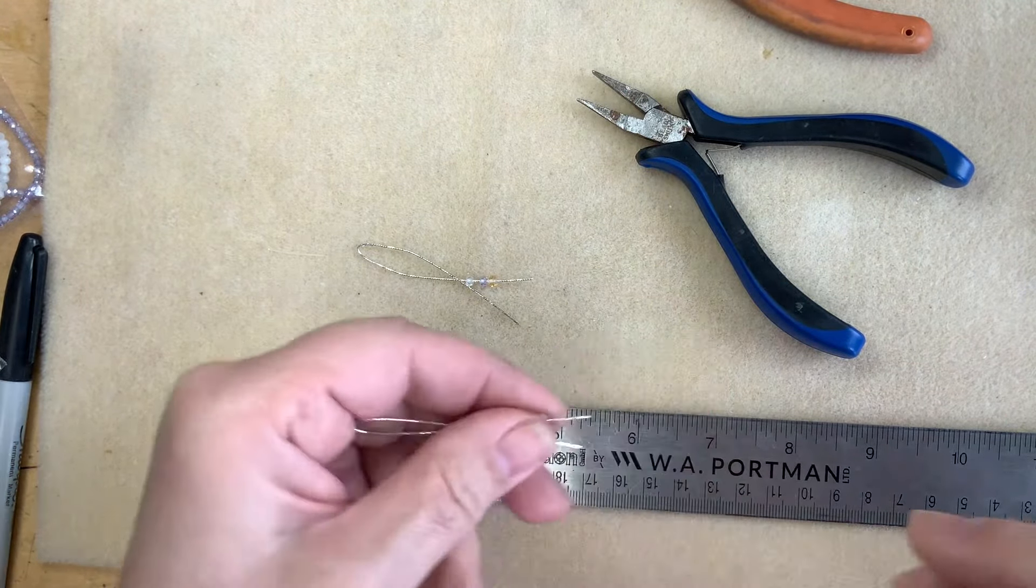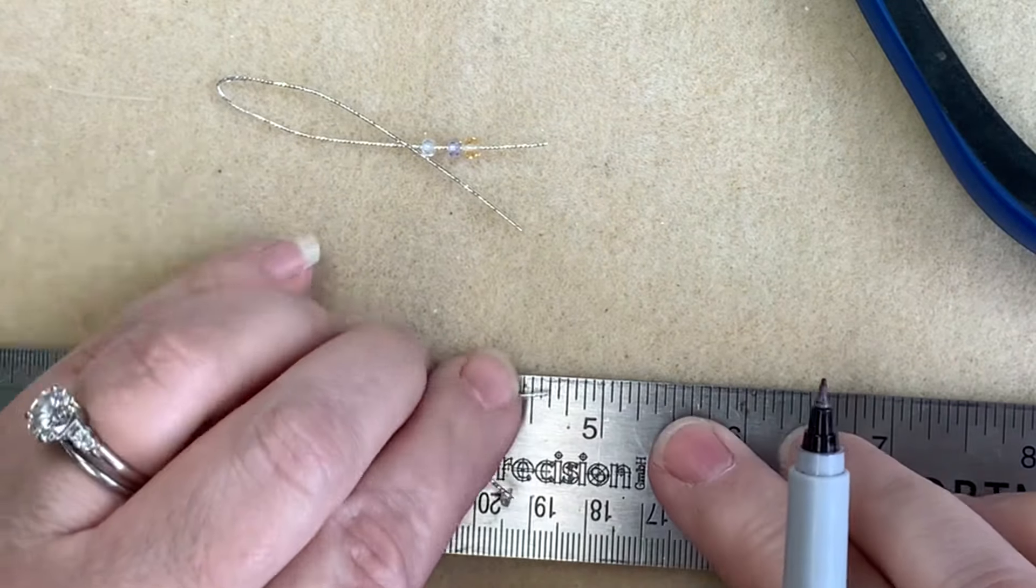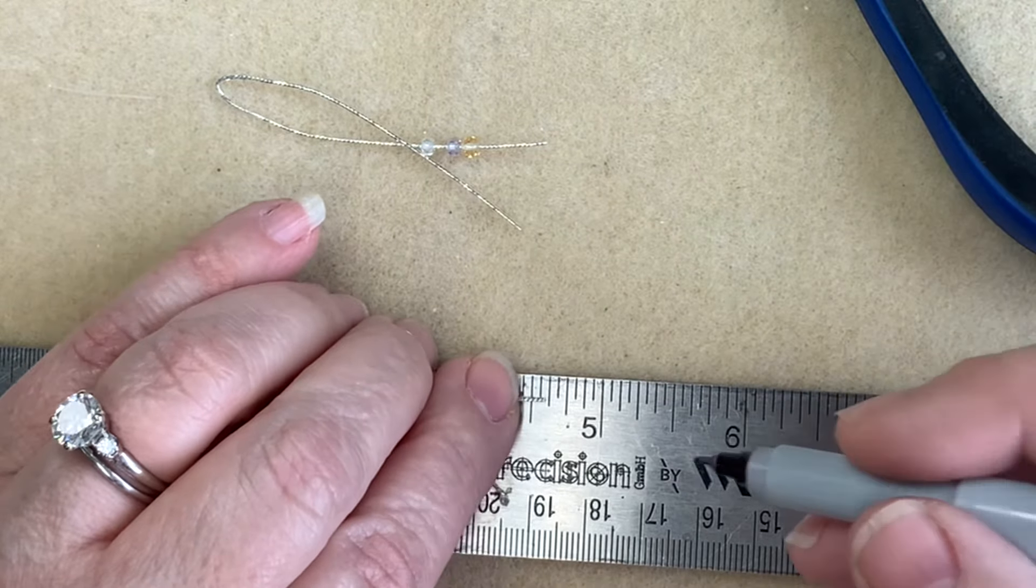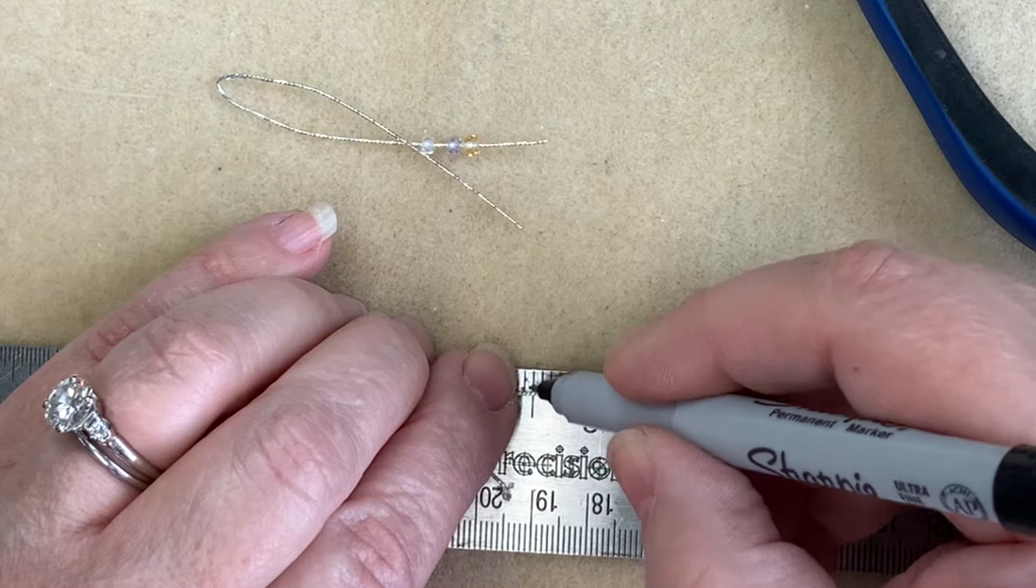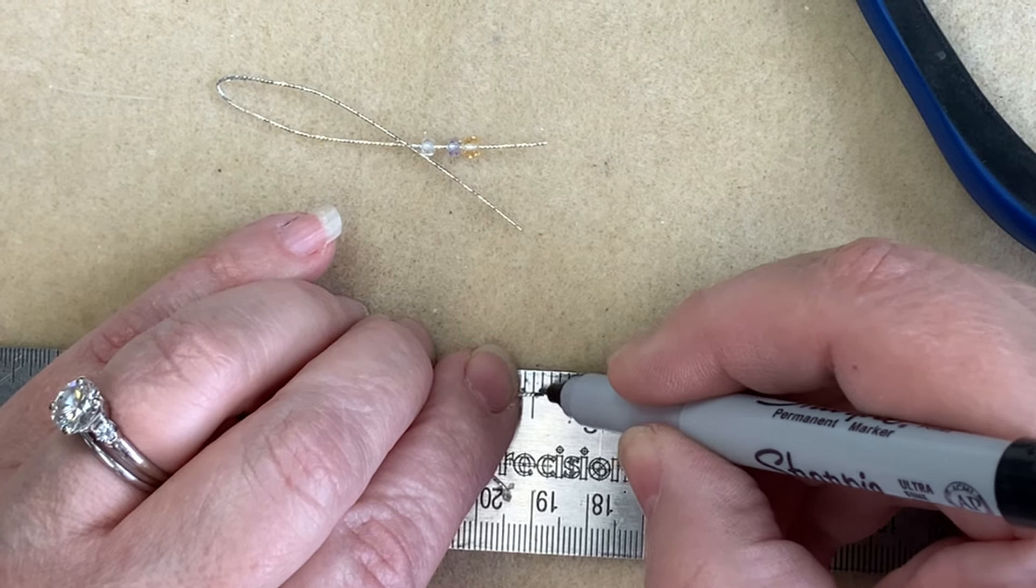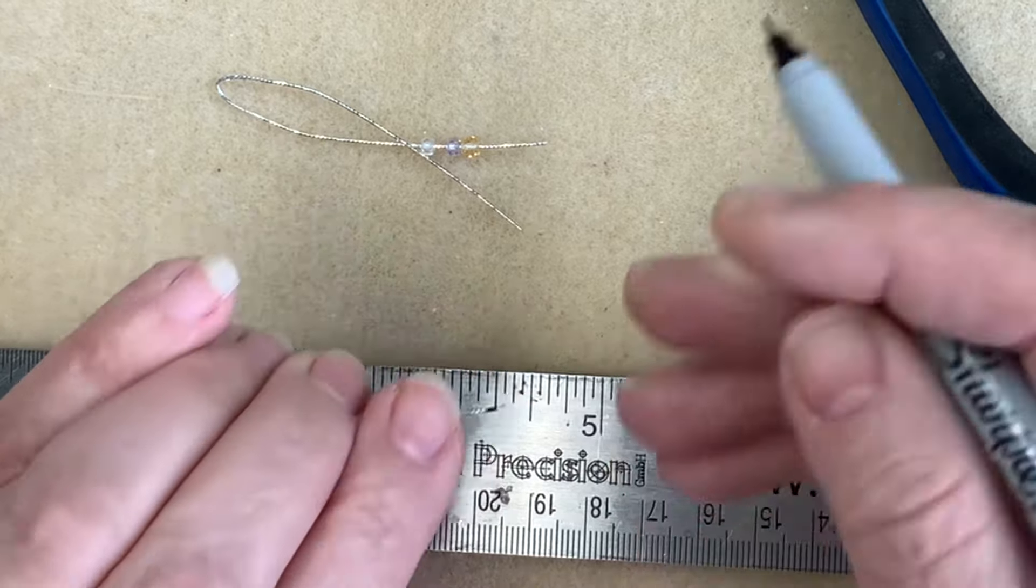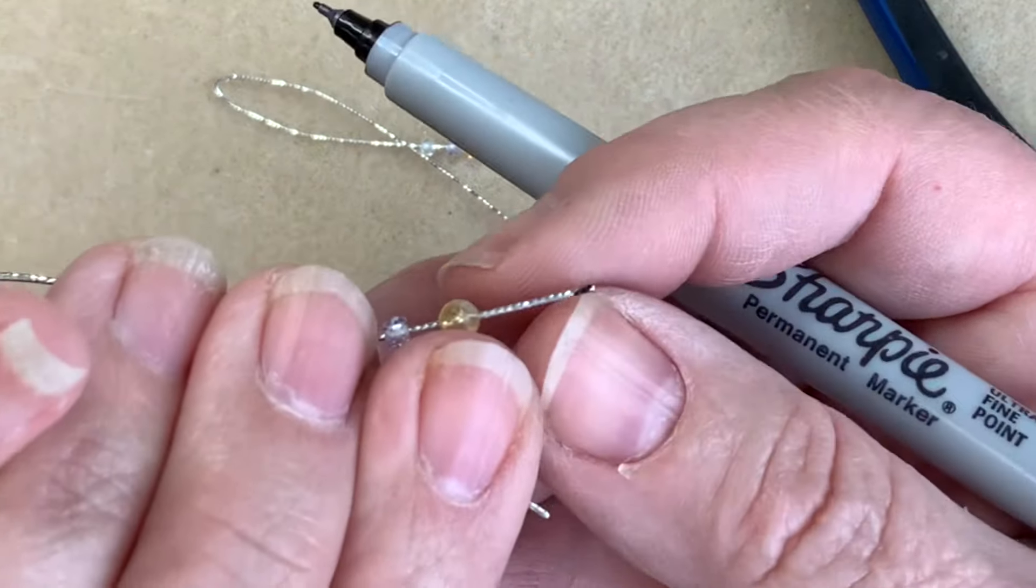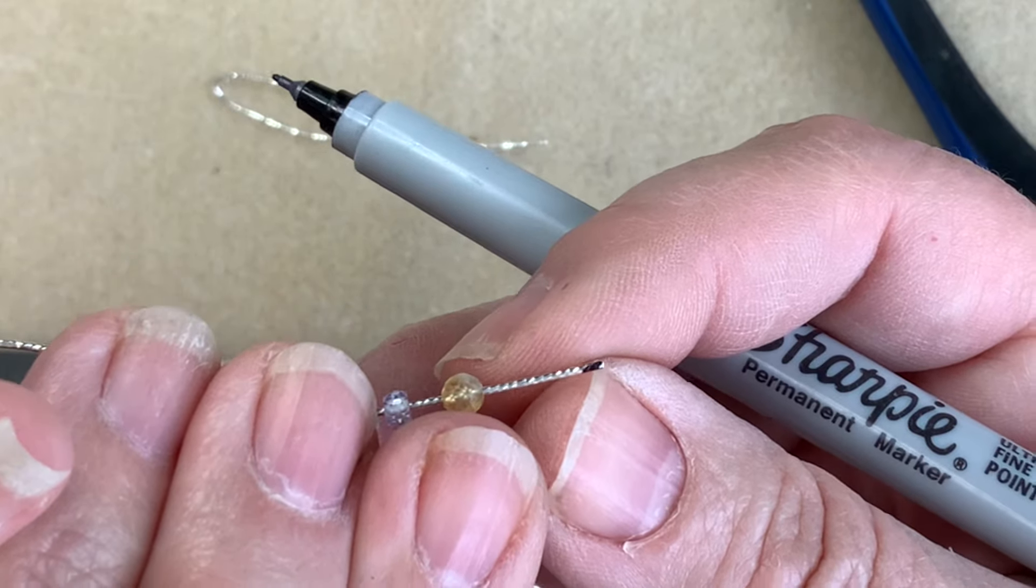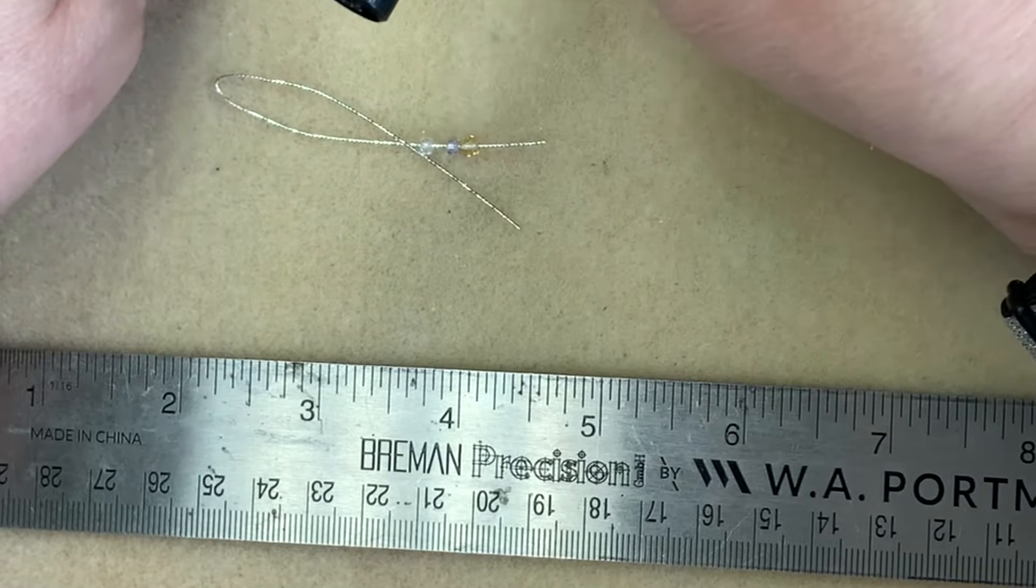And to do that, I think it's easier if you mark the area that you want to flatten on these, just so you can get them even. So I only want to do about an eighth inch here. So I'm going to color the wire black so I can see it really well when I put it in the pliers, how much of the wire I want to flatten.